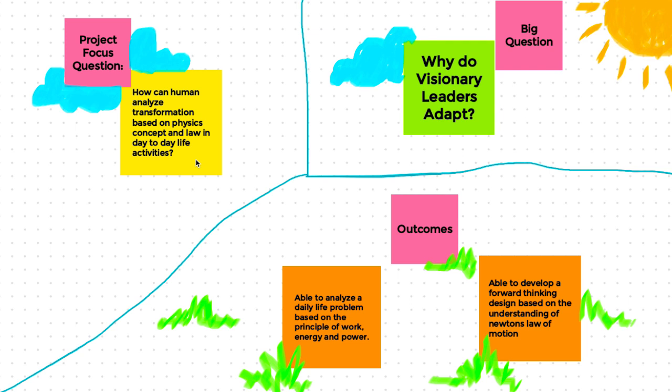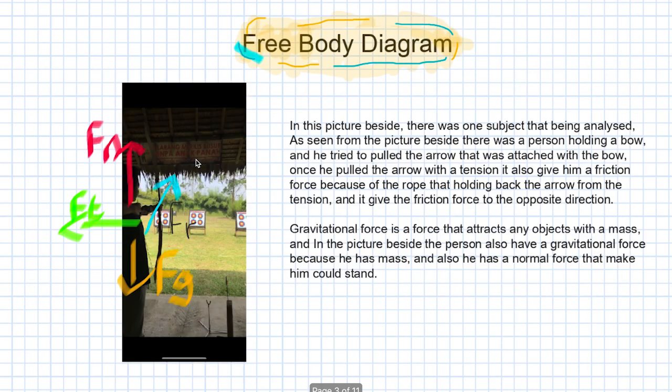Our second big question is: why do visionary leaders adapt? In this term 2, we have two outcomes. Our first outcome is to be able to analyze daily life problems based on the principle of work, energy, and power. Our second outcome is to be able to develop a forward-thinking design based on the understanding of Newton's laws of motion.